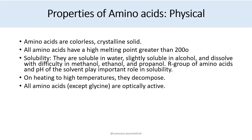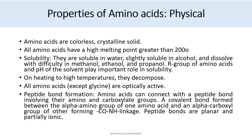All amino acids are optically active except glycine. Amino acids can connect with a peptide bond involving their amino and carboxylate groups — a covalent bond formed between the alpha amino group of one amino acid and the alpha carboxylic group of another, forming carbon-oxygen and nitrogen-hydrogen linkages. Peptide bonds are planar and partially ionic. These are the physical properties of amino acids.